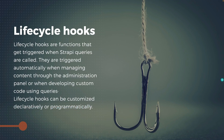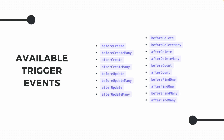These are the available trigger events — I'll put the docs link in the notes. We have beforeCreate, beforeCreateMany, afterCreate, afterCreateMany, and so forth. For any CRUD operation available in Strapi, you can trigger a lifecycle hook function either before the operation occurs or immediately after it.